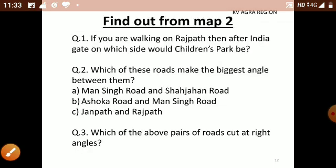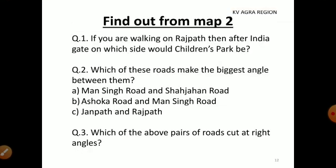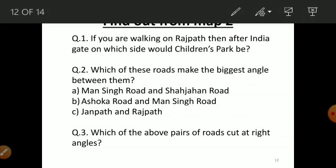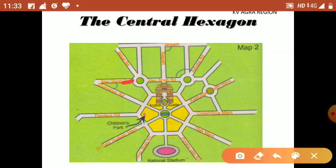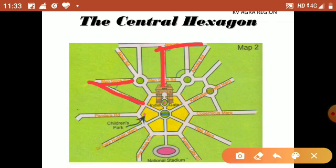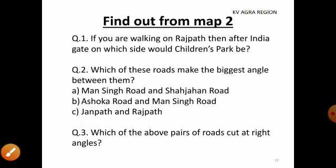Let's move to our next question: which of these road pairs makes the biggest angle between them — Mansingh Road and Shah Jahan Road, Ashoka Road and Mansingh Road, or Janpath and Rajpath? Looking at the map: Mansingh Road and Shah Jahan Road make an acute angle. Rajpath and Janpath make a right angle of 90 degrees. Ashoka Road and Mansingh Road make an obtuse angle. So it is clear that Ashoka Road and Mansingh Road make the biggest angle between them.